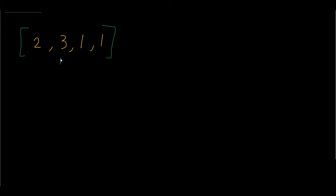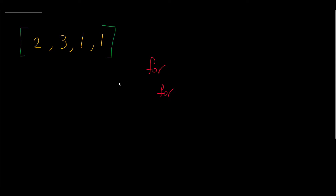Now the green pointer starts at 3 and the blue is next to it at 1. Is 3 and 1 the same? No. Is 3 and 1 the same? No again. We reached the end, so update the two pointers. Now the green starts at 1 and the blue pointer is next to it. Is 1 the same as 1? Yes — so we have a duplicate and we return true. This approach requires two nested for loops, so the time complexity is O(n²). This approach is extremely slow.